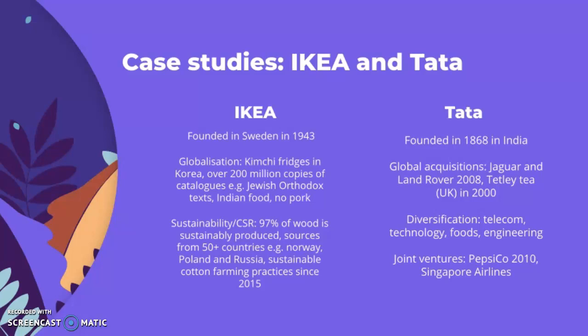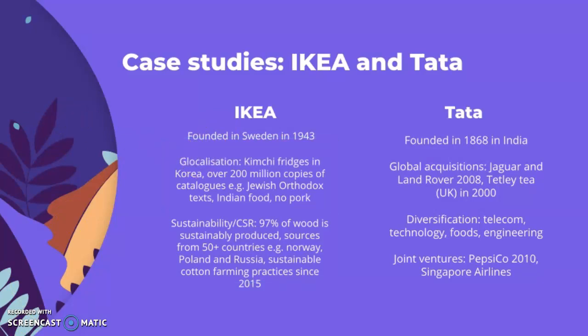The case studies cover IKEA and Tata Motors. IKEA was founded in Sweden in 1943. One of their global strategies is glocalization — adapting their products to the local market. For example, they offer kimchi fridges in Korea, and over 200 million copies of their catalogues are adapted to each culture.